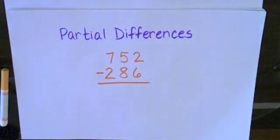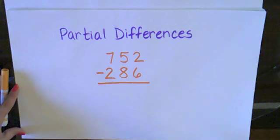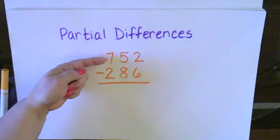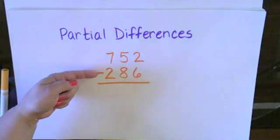We're now going to work on partial differences subtraction strategy. So I need to subtract each of my place values one at a time. The first thing I'm going to do is look at my hundreds. I have 752 minus 286.